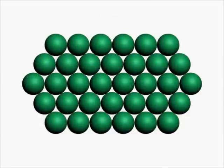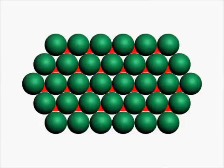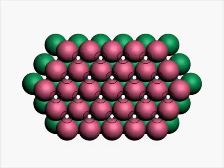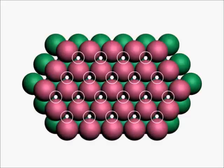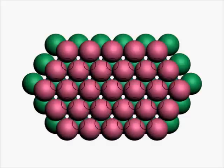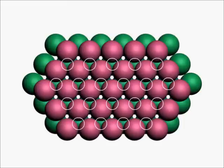In 3-dimensional close-packing, the spheres of the second layer B are placed over the triangular voids of the first layer A. The triangular voids of the second layer form octahedral voids with the first layer, while these other triangular voids do not form octahedral voids with the first layer.